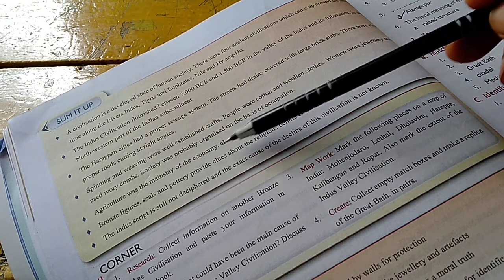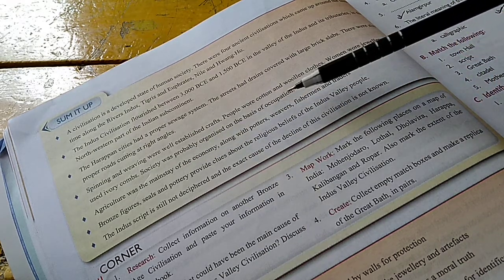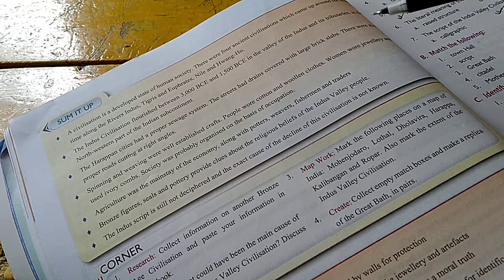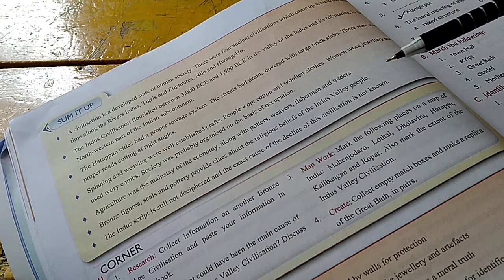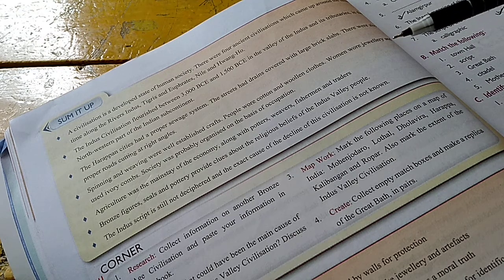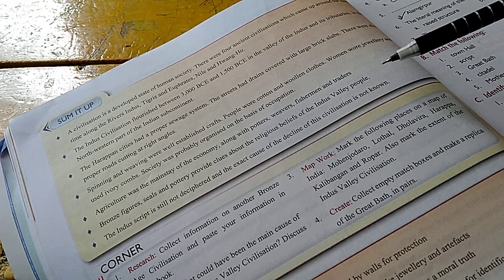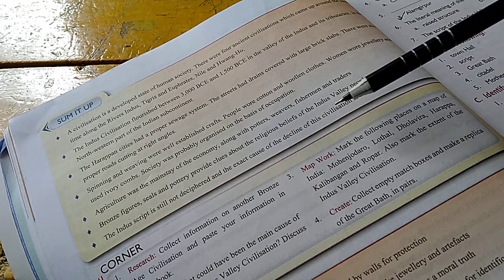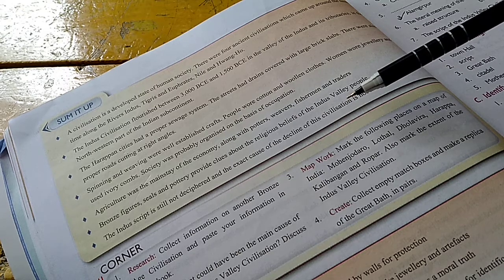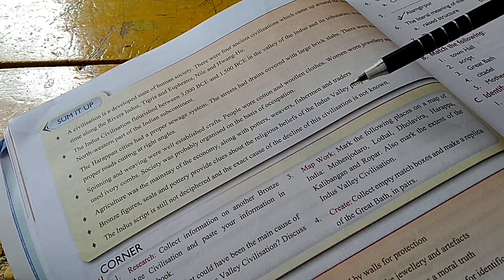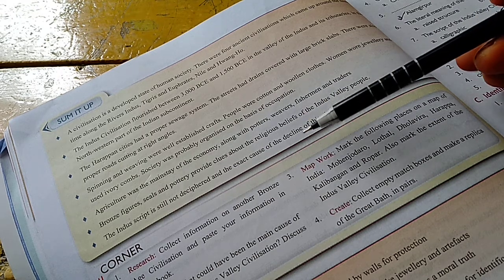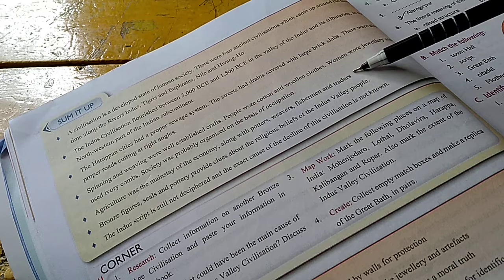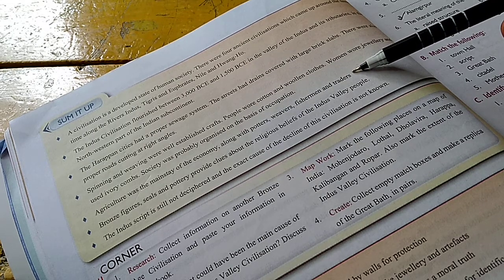Agriculture was the mainstay of the economy along with potters, weavers, fishermen and traders. Even though the entire population didn't depend on it, agriculture was still the mainstay. Even today we say India is an agriculture country. Since it was along the river side, on the river bank, the soil was very fertile because of the water. So agriculture was the mainstay along with potters, weavers, fishermen and traders.